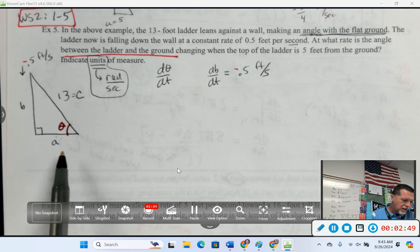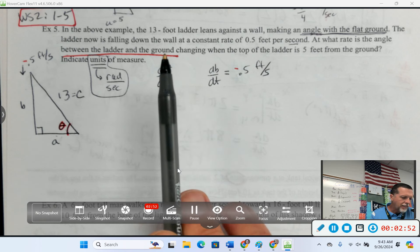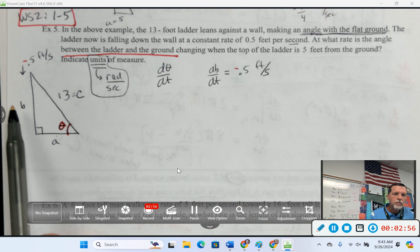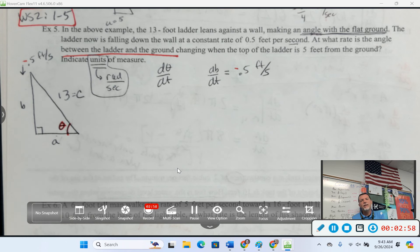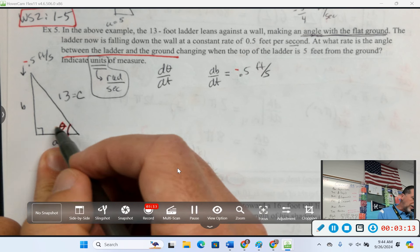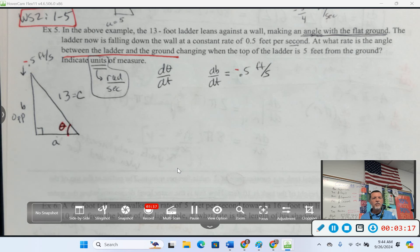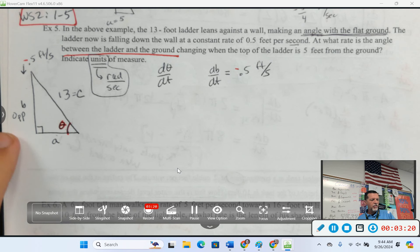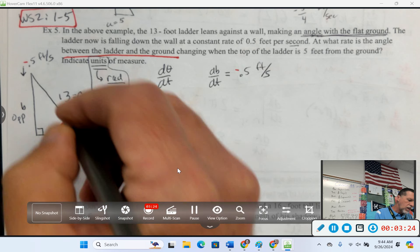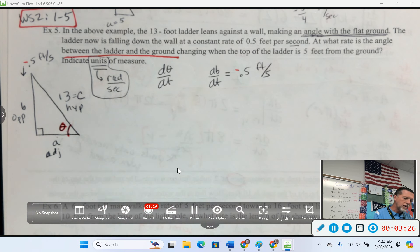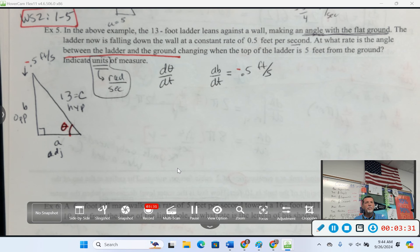Now I need an equation that has B in it and that has theta in it. So, I need an equation with B and theta. Think of an angle relationship that has B in it. There's actually three of them, but one of them is a better choice than the others. Looking at that angle, B is the opposite side. So, that means I could use tangent and go opposite and adjacent, or I could use sine and go opposite and hypotenuse. They're both legitimate. One's just going to be a whole lot easier. Do you know which one we should use?